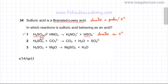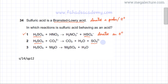Looking at option 2, we have H₂SO₄ on one side and SO₄²⁻ on the other. Starting from H₂SO₄ and ending at SO₄²⁻, it has donated 2 H⁺ ions in this reaction. So it is still acting as an acid — a proton donor.